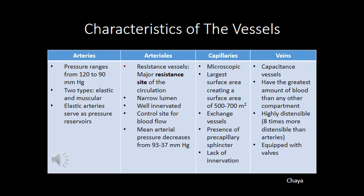This slide shows the characteristics of the vessels — arteries, arterioles, capillaries, and veins. Arteries form the elastic vessels and the low resistance vessels; arterioles are usually high resistance; capillaries are the site of exchange and therefore exchange vessels; and the veins are the capacitance vessels. If you look at the slide, you will see the characteristics possessed by each group.